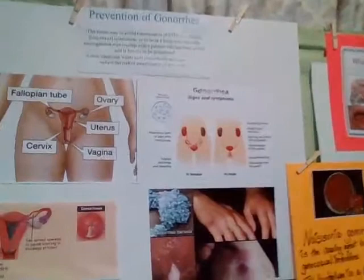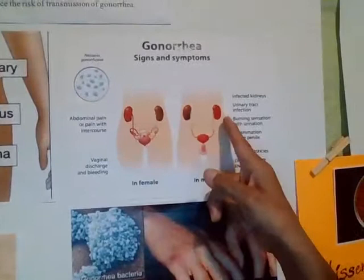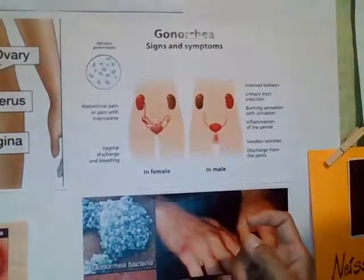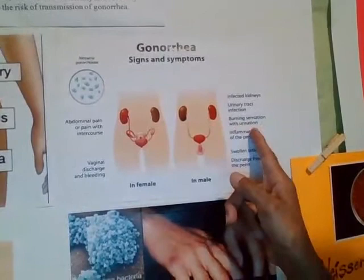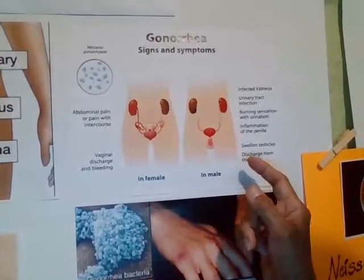This is the male reproductive system. You have your urinary tract area. Sometimes they become infected with urinary tract infection when infected with this bacterium, as well as women. As far as the men are concerned: urinary tract infection, infected kidneys, a burning sensation when urinating, inflammation of the penile. The tip of the penis gets swollen while discharging the bacterium. They have swollen testicles and discharges from the penis.